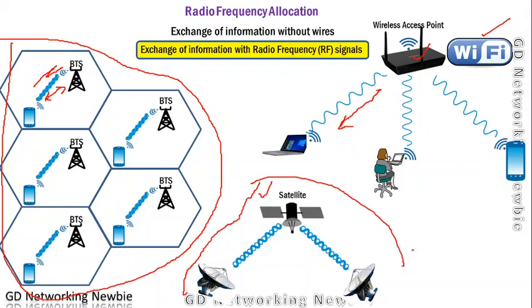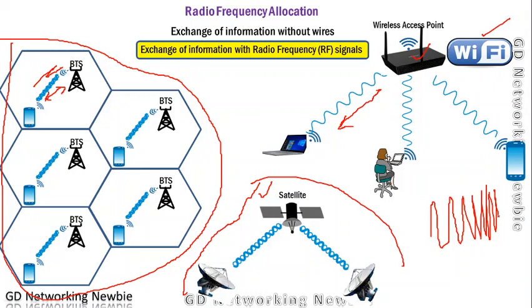All these radio frequency signals have a frequency, and frequency means the number of cycles per second — how many cycles occur in one second. In terms of frequency, these signals can be divided into various categories. These frequencies have been allocated for different applications and they have different names, which we are going to discuss.